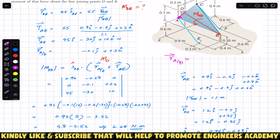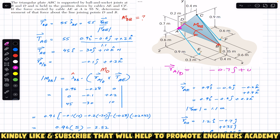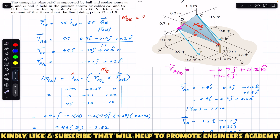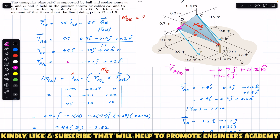So the position vector of A relative to D begins with −0.7j. Then we travel 0.2 meters in the positive k direction, plus 0.6j along the y — adding these y components gives −0.1j. There is no travel in the x direction because points D and A lie in the same plane. Therefore, the position vector of A relative to D is: r_A/D = 0i − 0.1j + 0.2k.